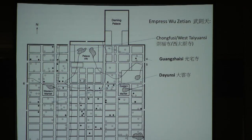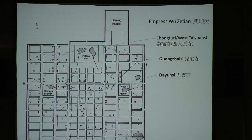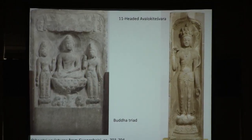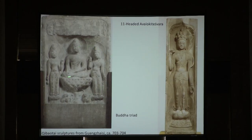Empress Wu Zetian, consort of Emperor Gaozong who later became emperor when she founded the Zhou Dynasty, built several monasteries in Chang'an. One was called Guangzai Monastery, just south of the Daming Palace. Some of the best-known sculptures from her time were originally relief carvings found inside this monastery. They decorate the exterior of the Qibaotai, or Tower of Seven Treasures—the seven treasures being associated with symbols of the universal monarch. Among these, we see the introduction of an eleven-headed Avalokiteshvara, or eleven-headed Guanyin.